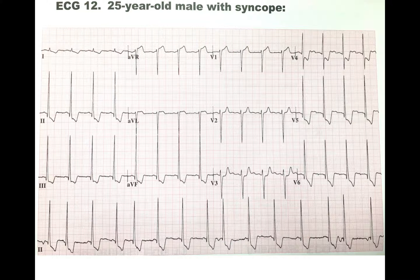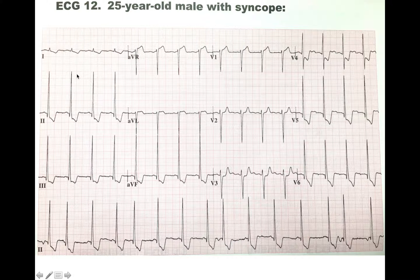With every EKG, the first thing you want to do is find the rate. Looking at lead 2, you can see there's 300, 150, 175. So the rate is between 75 to 100. It is neither tachycardic, which is above 100, nor bradycardic, which is below 60.